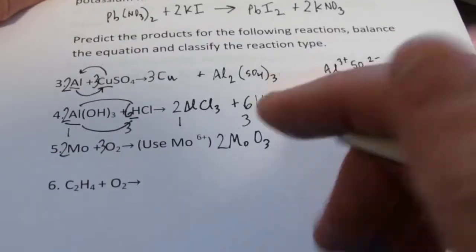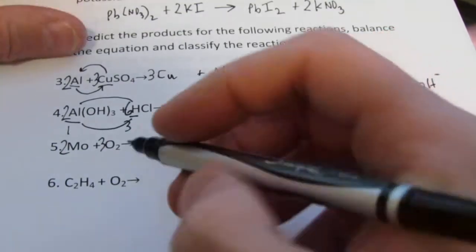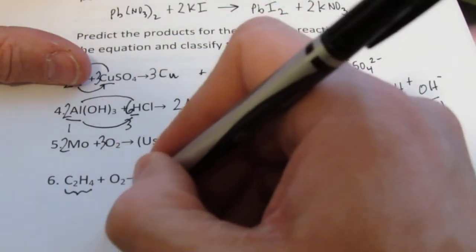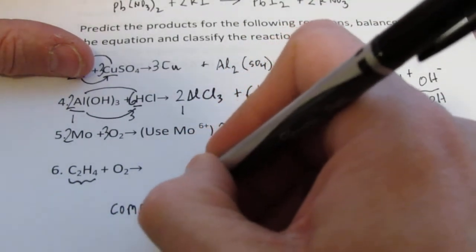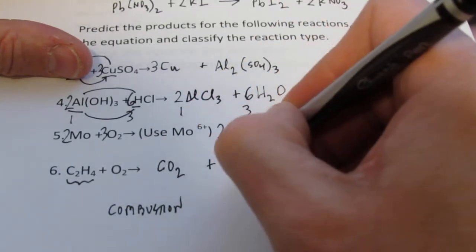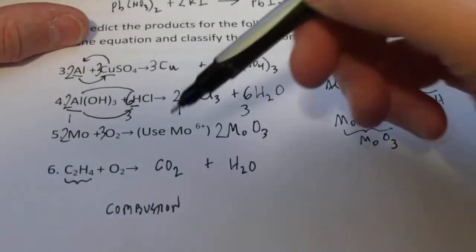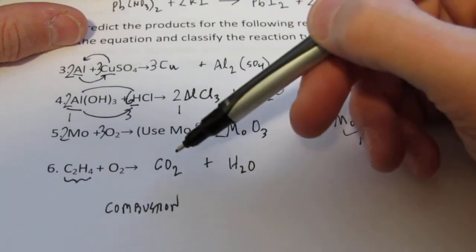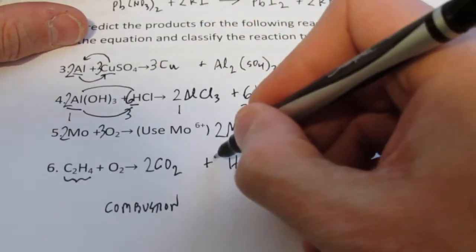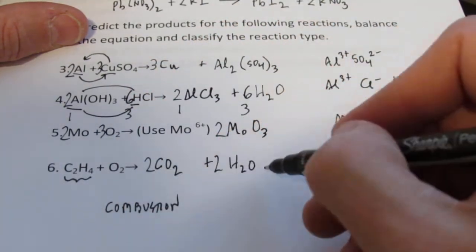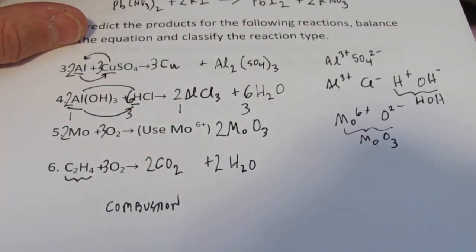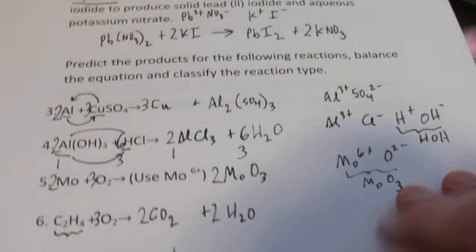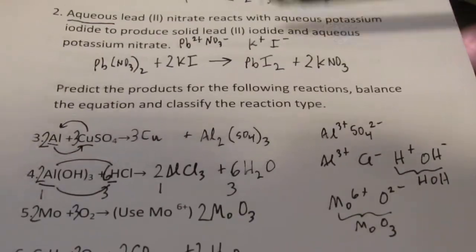Number 6: ethene C2H4 and oxygen. When you see a hydrocarbon or carbohydrate reacting with oxygen, these are combustion reactions. The products are always CO2 and water. Balancing: C2H4 + 3O2 → 2CO2 + 2H2O. On the exam, be prepared to write formulas, name compounds, balance equations and do stoichiometry.